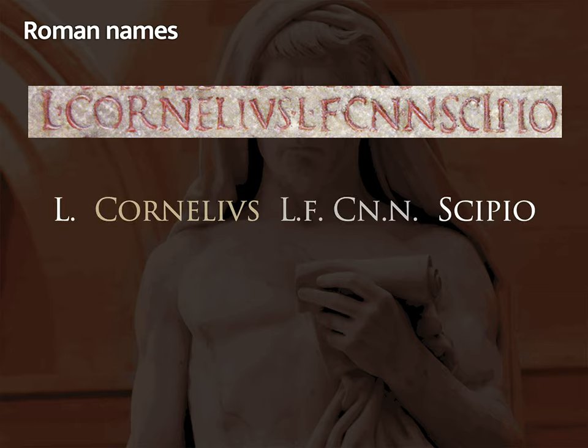What the Romans called a name — the nomen — is the family name. This man's name was Cornelius, the name of his family, and everything about his name is subordinate to that. He belongs to the Cornelius family, this large extended family that the Romans called a gens or a clan. That is what matters about him.